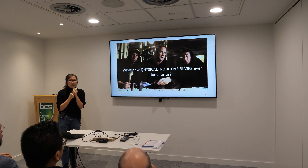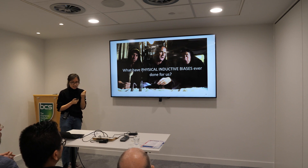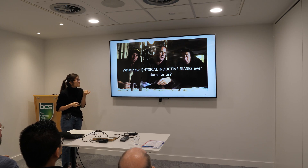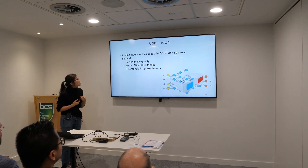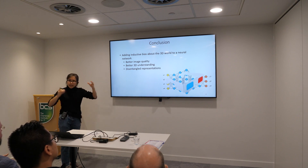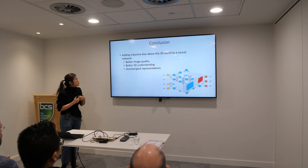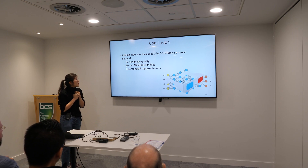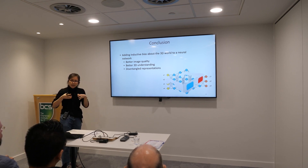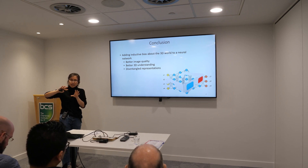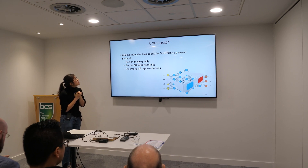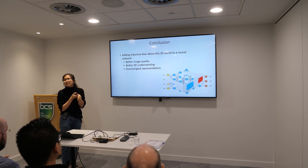So what does adding these inductive biases do to our GAN model? Just by adding the knowledge that the world is 3D, the model can now generate images with better quality, capture more than just white backgrounds, achieve better 3D understanding so you can freely rotate around objects, and have a disentangled representation where you can factorize out pose, appearance, and shape — rather than an entangled representation. That is the end of my talk, thank you.